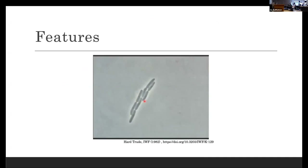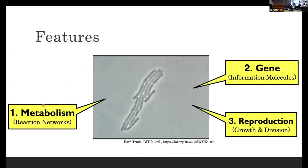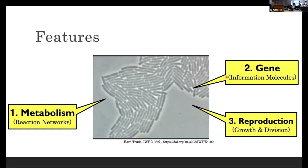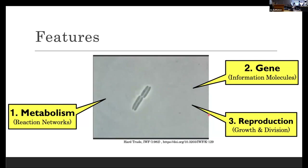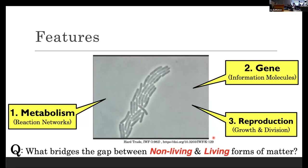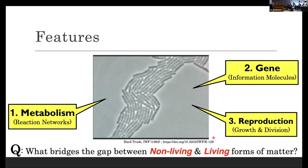This is my favorite movie: the reproduction of bacterial cells. Generally speaking, we can find three features behind such a living system. First one is the metabolism — they have a complicated reaction network inside a cell. Second, they also have a gene, that is information molecules, DNA. And based on the genetic information of DNA, they show such a reproduction, that is a recursive growth and division of cells. My key question is: what bridges the gap between the simple non-living molecular assembly and the complex living system? This is my motivation.